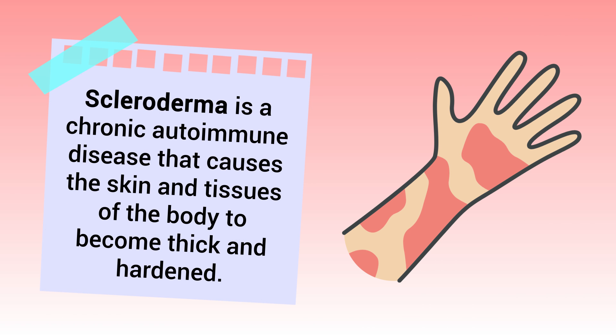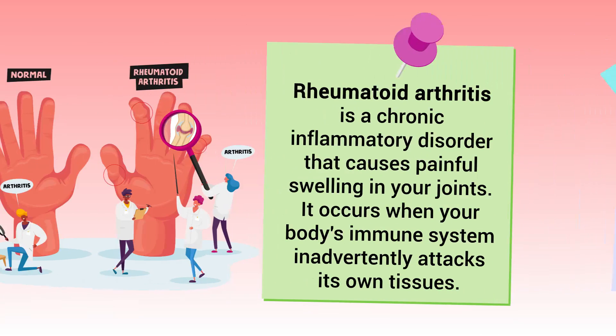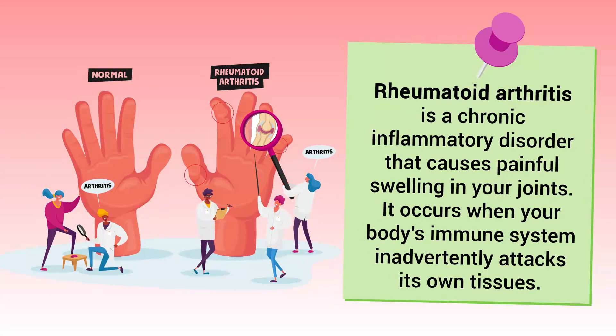Scleroderma is a chronic autoimmune disease that causes the skin and tissues of the body to become thick and hardened. Rheumatoid arthritis is a chronic inflammatory disorder that causes painful swelling in your joints. It occurs when your body's immune system inadvertently attacks its own tissues.